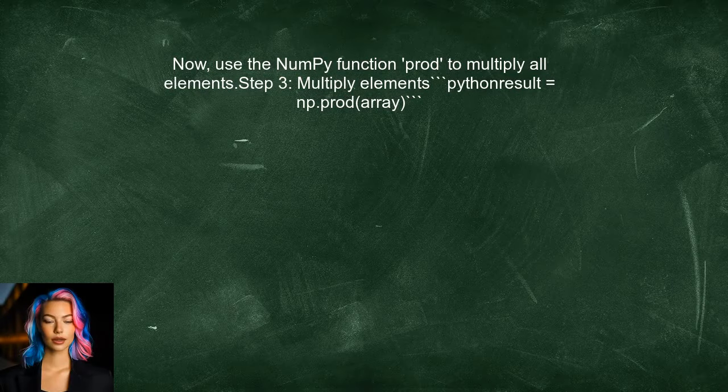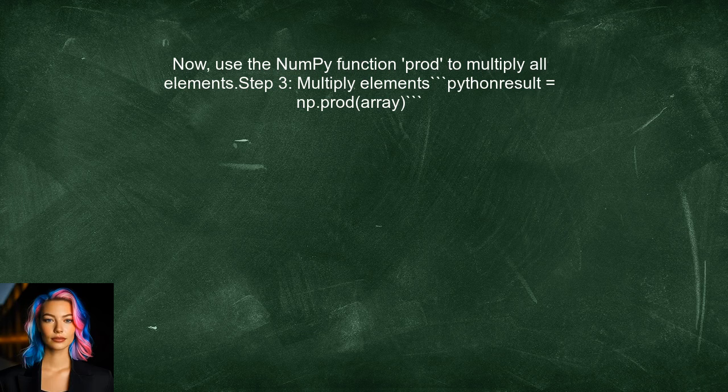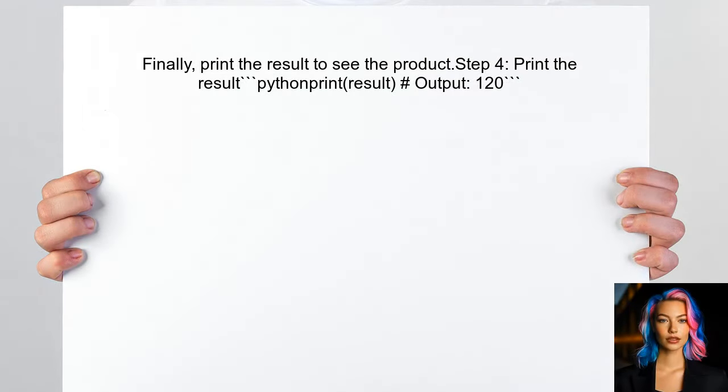Now to multiply all the elements in the array, the user can use the NumPy function called prod. This function computes the product of all elements in the array. Finally, the user can print the result to see the product of the elements in the array. This will give them the final value they are looking for.